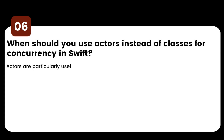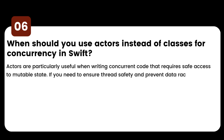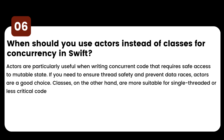When should you use actors instead of classes for concurrency in Swift? Actors are particularly useful when writing concurrent code that requires safe access to mutable state. If you need to ensure thread safety and prevent data races, actors are a good choice. Classes, on the other hand, are more suitable for single-threaded or less critical code when concurrency is not a concern.